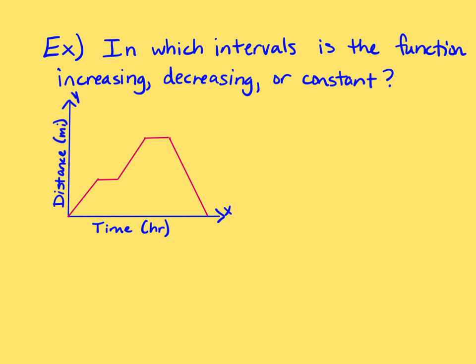In which intervals is the function increasing, decreasing, or constant? Notice that it gives you a graph, but it gives you no numbers. The y-axis is the distance in miles, and the x-axis is time in hours. It's just wanting you to identify where the function is increasing, where it's decreasing, and where it's constant from left to right.